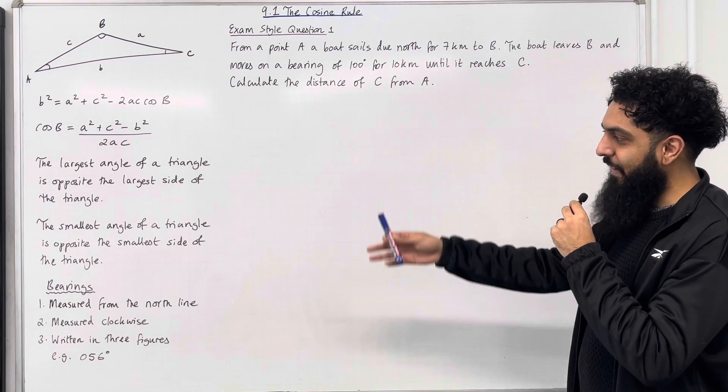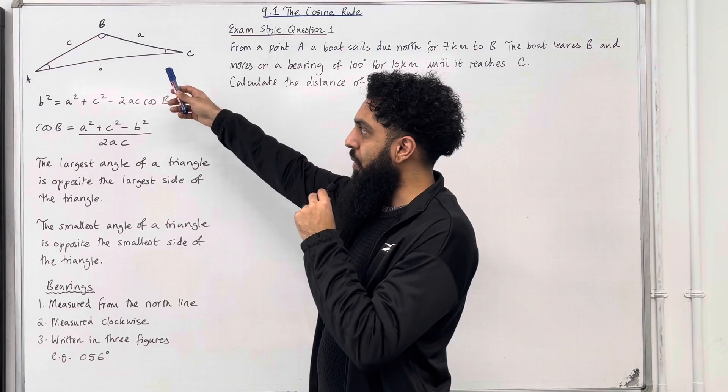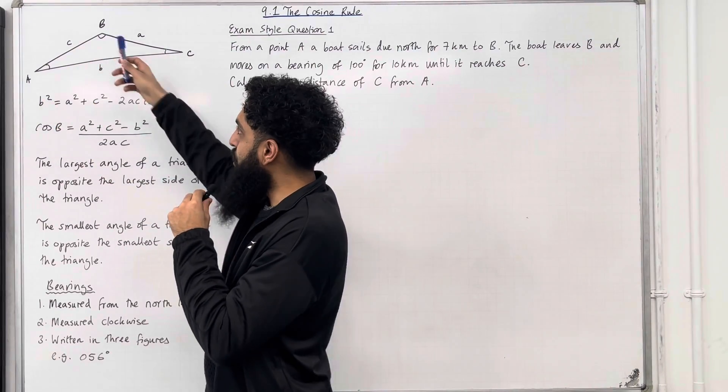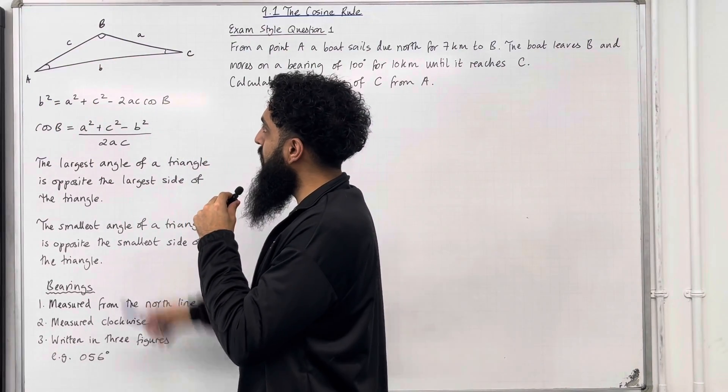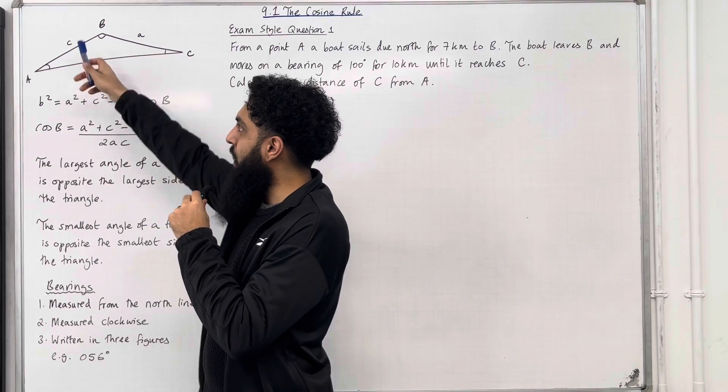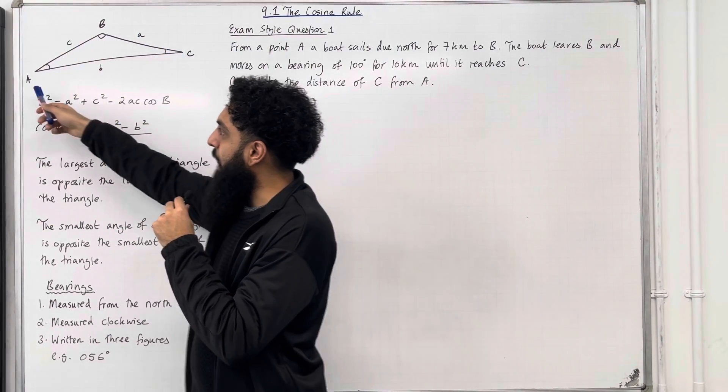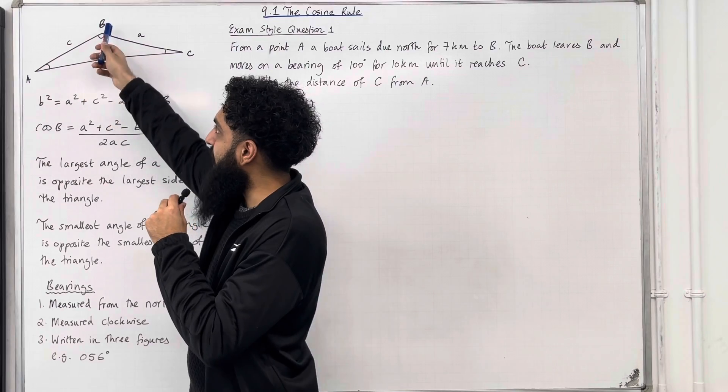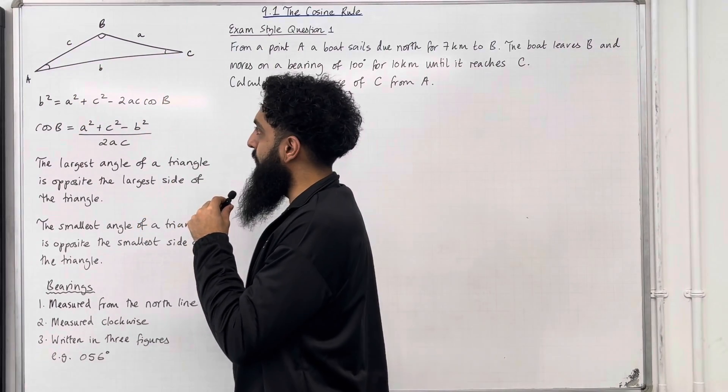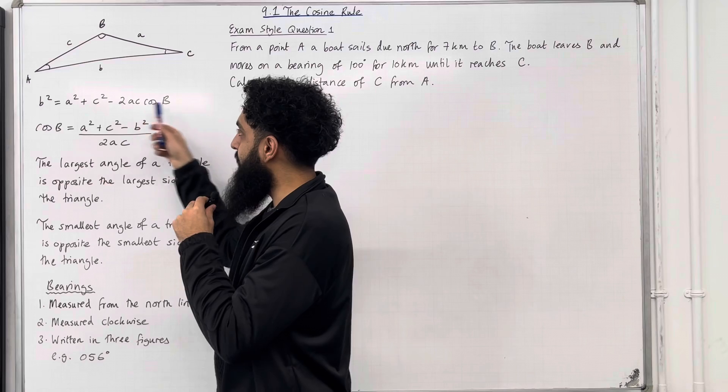Let's have a look at the key facts of this section. Consider the following triangle. Capital A, capital B, capital C represent angles. Lowercase a, lowercase b, lowercase c represent sides. Notice that lowercase a is opposite capital A, lowercase b is opposite capital B, and lowercase c is opposite capital C.